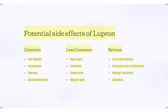Potential side effects of Lupron. Common side effects include hot flashes, headaches, nausea, and decreased libido. Less common side effects include bone pain, insomnia, depression, and weight gain.